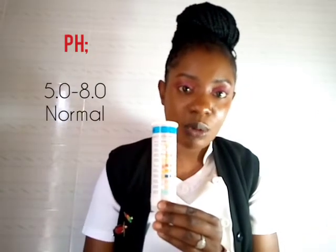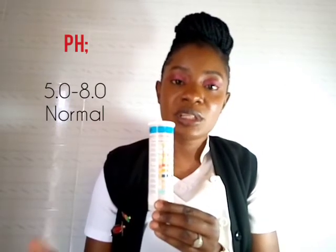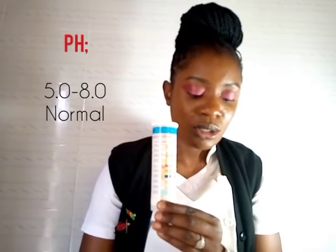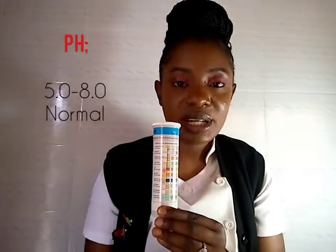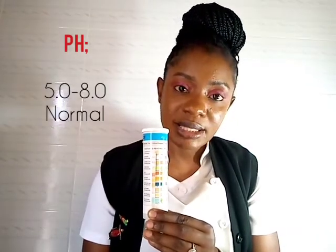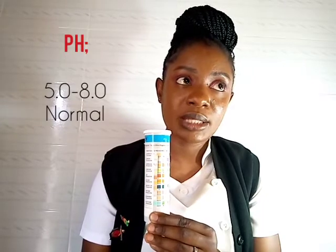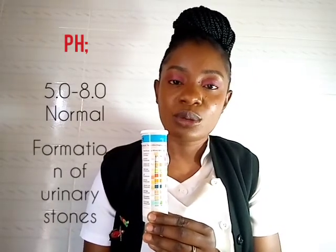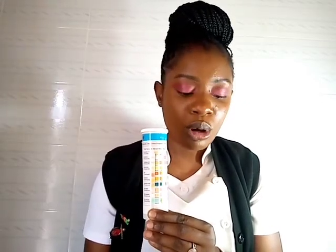We go to pH — you are supposed to check pH after 60 seconds. The normal pH range is 5.0 to 8.0. The urine is slightly acidic in nature. If the urine is more acidic, it may indicate the formation of urinary stones, although it can also be due to environmental or dietary factors.